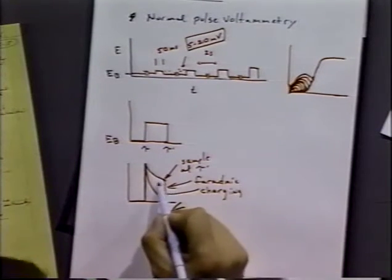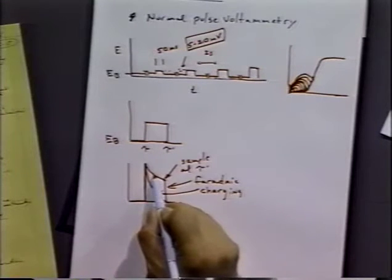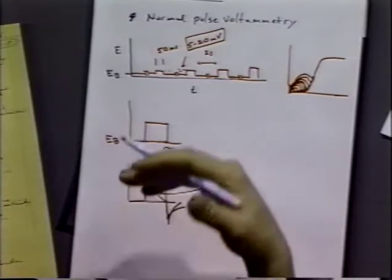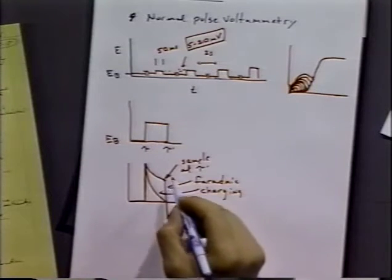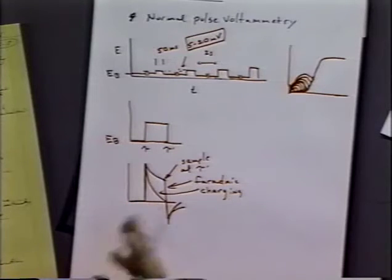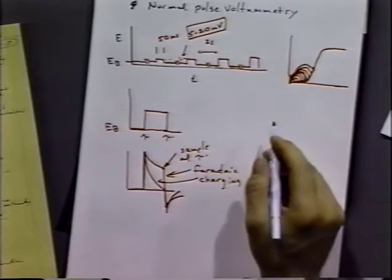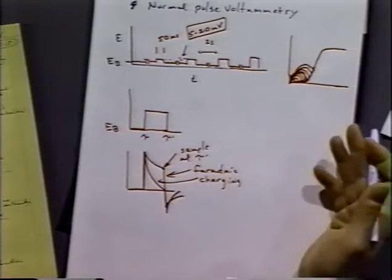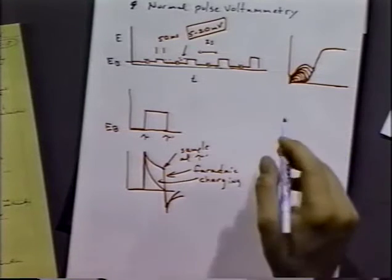So by holding off on our result we can sample later in the drop, the charging current amount is less. On the other hand, when it's less it means we're going to have more sensitivity. If we sampled earlier in the pulse we would get more current flow. So it's a trade-off between the charging current that we don't measure later in the drop, or the more current that we can measure if we sample earlier in the pulse. For polarography we would knock the drop off, or for voltammetry we would just continue on.